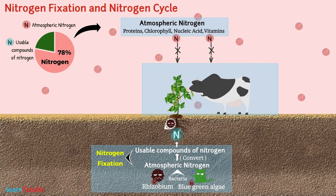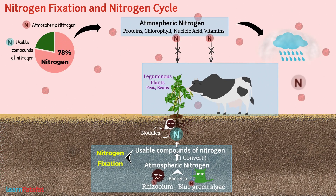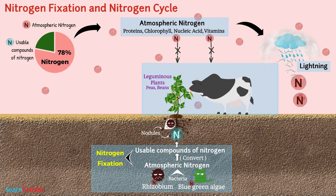Rhizobium lives in the root nodules of leguminous plants such as peas, beans, etc. Sometimes, through the action of lightning also, nitrogen gets fixed.